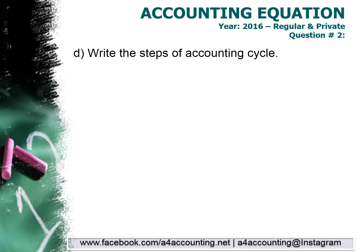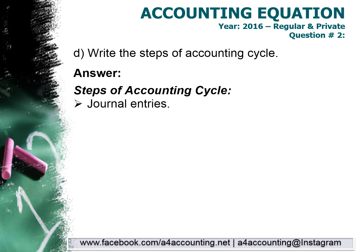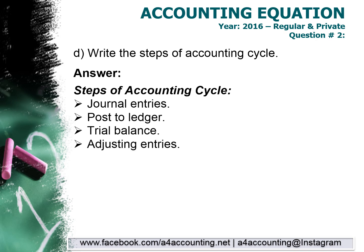The fourth part is: write the steps of the accounting cycle. The accounting cycle steps are as follows. The first step is journal entries. After journal entries, you create a T-account or ledger — this step is called Post to Ledger. Post to Ledger means you take the journal entries and post them into the ledger. After that, you create a trial balance, which is called the unadjusted trial balance because it has not yet been adjusted.